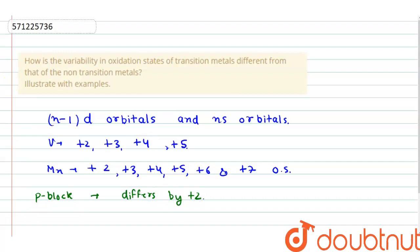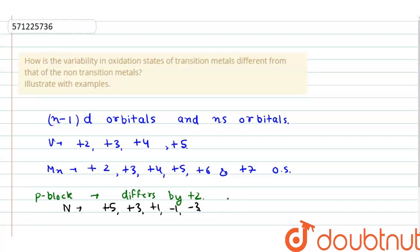For example, if we talk about nitrogen, it shows oxidation states of +5, +3, +1, -1, and -3. You can see that these oxidation states differ by 2. On the other hand, transition metals show oxidation states which differ by 1.